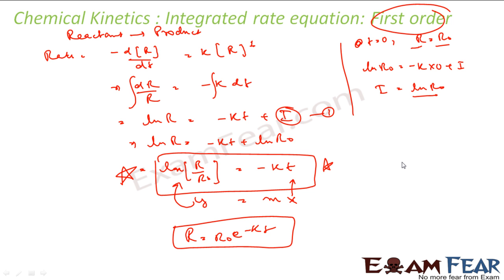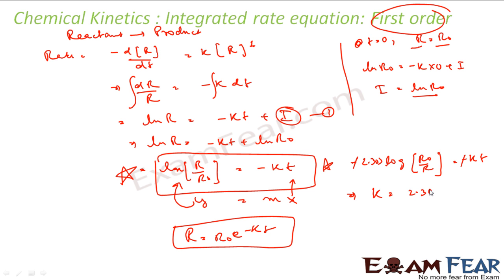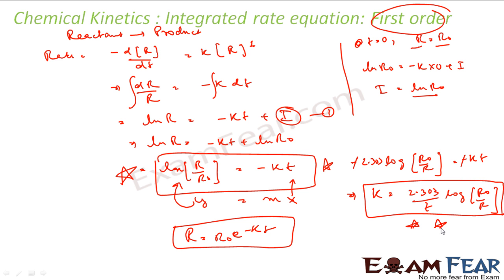We frequently use this form. Since ln becomes 2.303 log, and flipping R/R₀ to R₀/R removes the minus sign: k = (2.303/t) × log(R₀/R). This is the form used very frequently. For the graph we use the ln(R/R₀) vs t form, but they are equivalent — I just replaced ln with log and removed the minus sign by swapping R/R₀ to R₀/R.